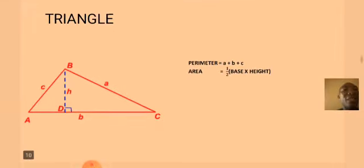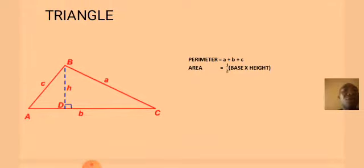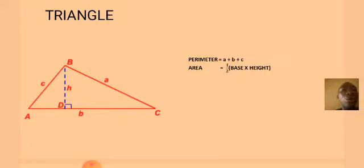Let's look at the next shape: triangle. It has 3 sides. We have the dotted line as our height. The triangle has 3 angles: angle A, angle B, and angle C. Where angle A faces is side A, where angle B faces is side B, and where angle C faces is side C. The perimeter of a triangle will be side A plus side B plus side C. The area of a triangle will be half multiplied by base multiplied by height.